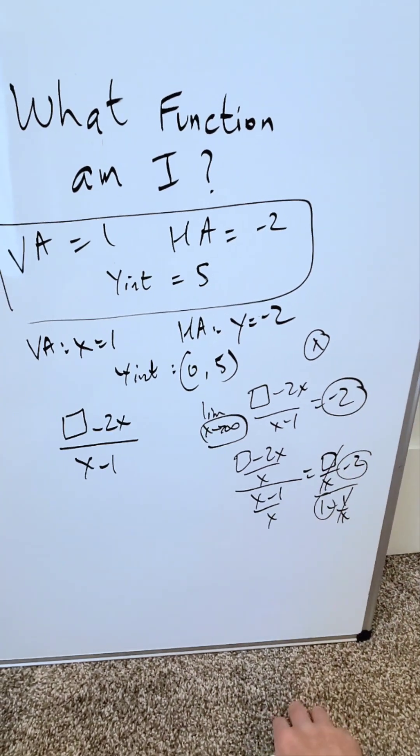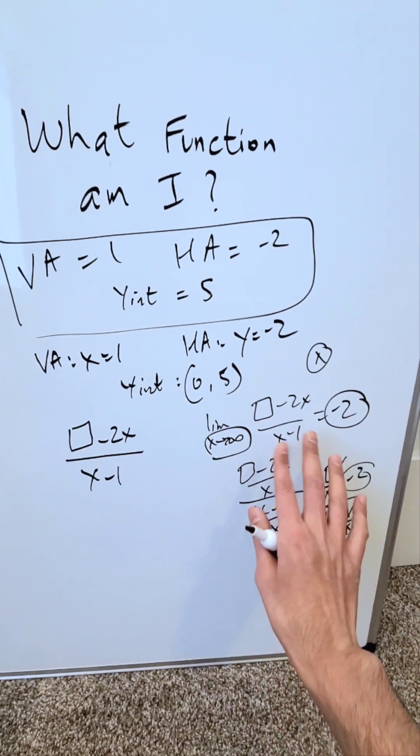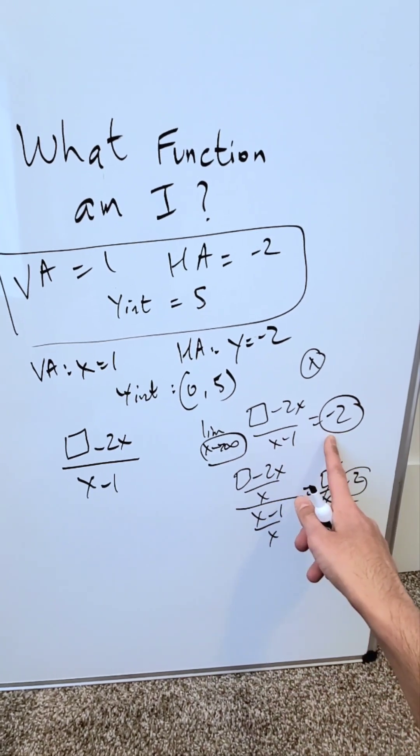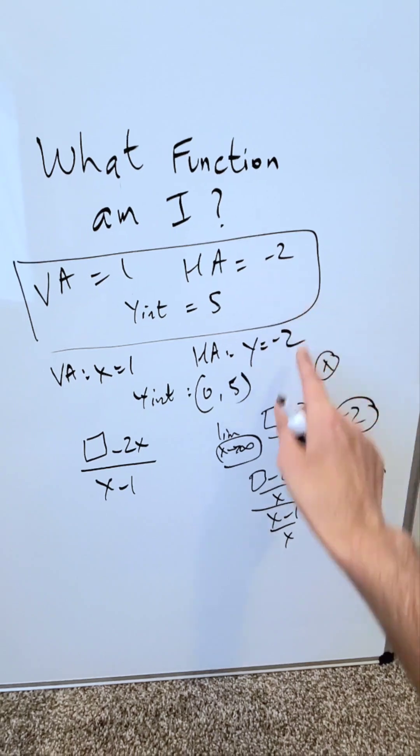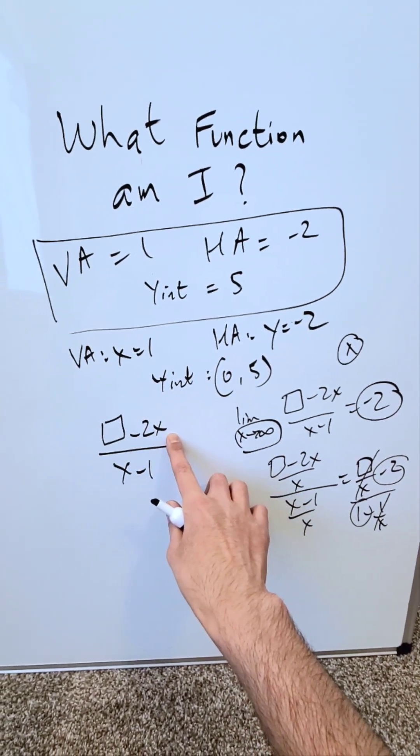What would this minus 2 tell me? It would tell me that the curve of this rational function as x approaches infinity is approaching a horizontal asymptote. And that right there is this minus 2. So I now know that this representation here is indeed correct.